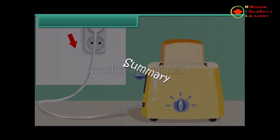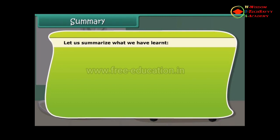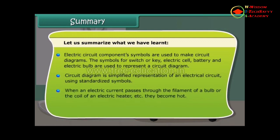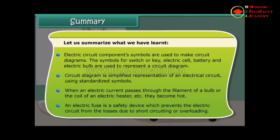Summary. Let us summarize what we have learned. Electric circuit component symbols are used to make circuit diagrams. The symbols for switch or key, electric cell, battery, and electric bulb are used to represent a circuit diagram. Circuit diagram is a simplified representation of an electrical circuit using standardized symbols. When an electric current passes through the filament of a bulb or the coil of an electrical heater, they become hot. An electric fuse is a safety device which prevents the electric circuit from losses due to short circuiting or overloading.